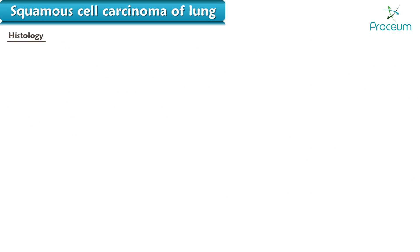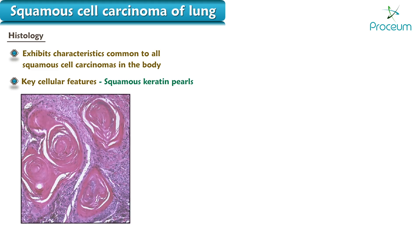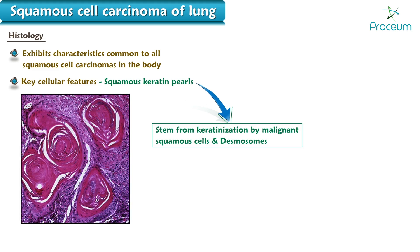Histologically, squamous cell carcinoma of the lung exhibits characteristics that are common to all squamous cell carcinomas in the body. The key cellular features include squamous keratin pearls, which stem from abundant keratinization by the malignant squamous cells, and intercellular bridges — the desmosomes.